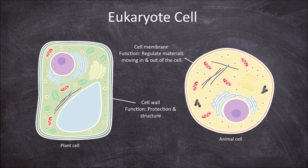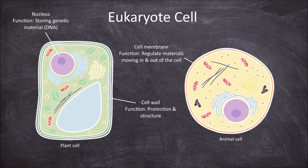It also maintains the structure and shape of the cell. Since eukaryotes are organisms that possess a nucleus, both plant and animal cells have a nucleus. The nucleus is a membrane bound organelle whose function is in storing the genetic material, the DNA of the cell.